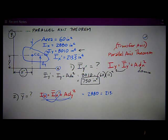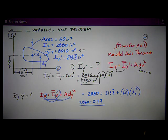213.3 repeating, plus the area 60 times that dy distance—that's what I'm solving for—squared. So I just rearrange this and I get 2880 minus 213.3, subtract that from both sides, then divide by 60, and that is equal to dy².